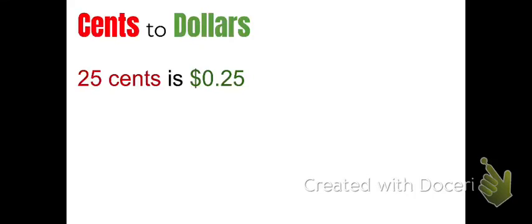On the Applied Math WorkKeys test, you might be presented with word problems where they write money like this. And you need to convert it to a decimal so that you can make calculations. So 25 cents is the same as $0.25.